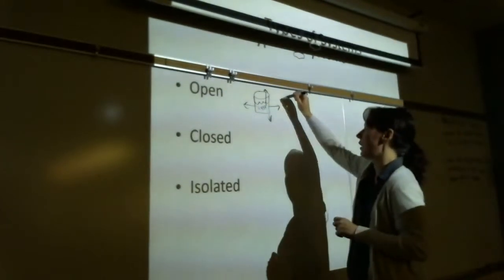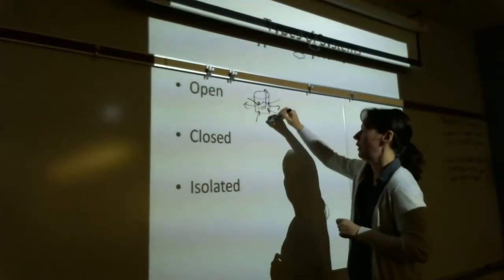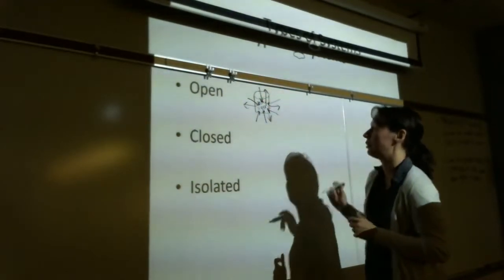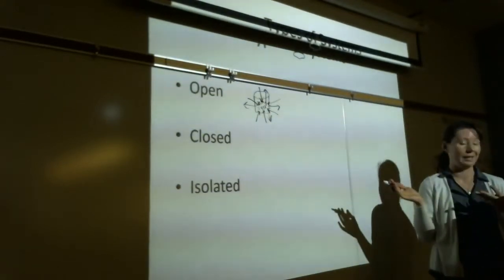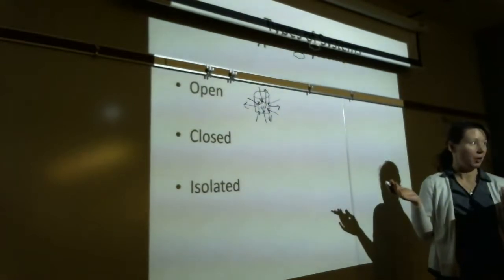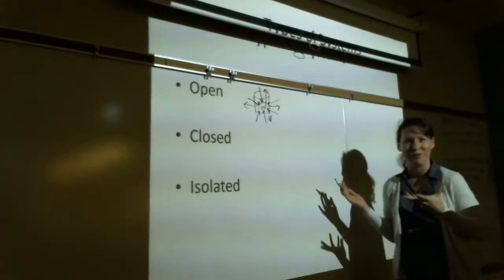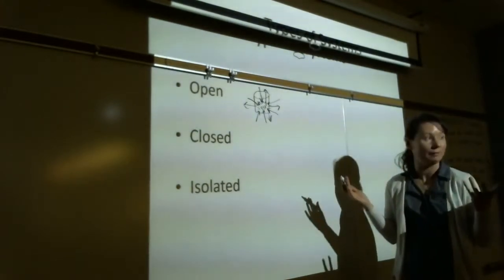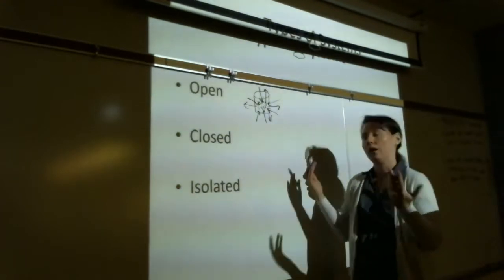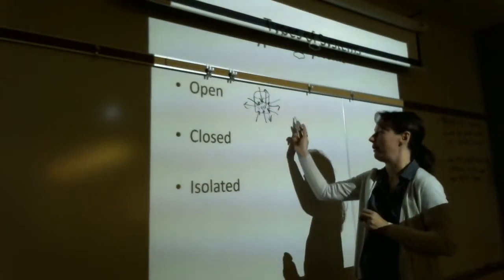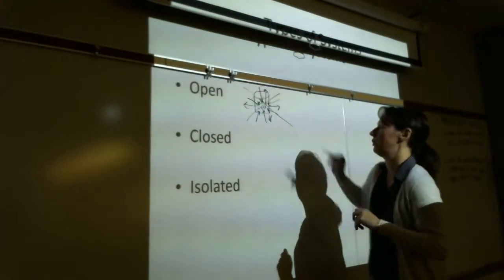Likewise, there's also nothing stopping heat from coming in. So if the system was colder than the surroundings, there's nothing stopping heat from coming in or going out. Obviously, would this be an ideal situation for conducting thermal experiments? No. It's way too open. There's just too much variability. Because if the temperature goes up or down, I don't know where it came from — was it because heat came out or heat came in? This is obviously not ideal for some sort of lab.